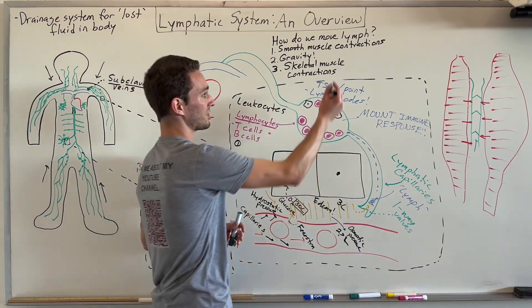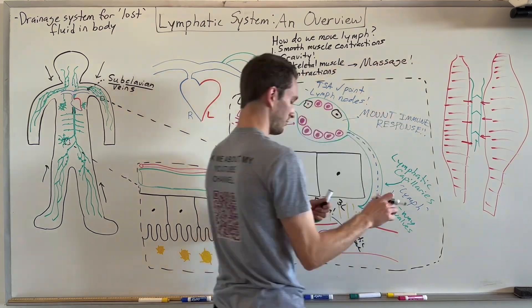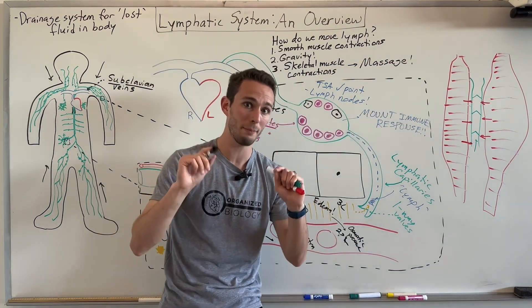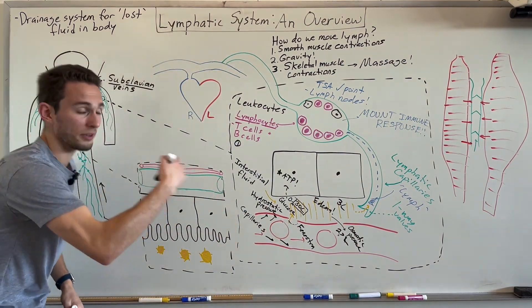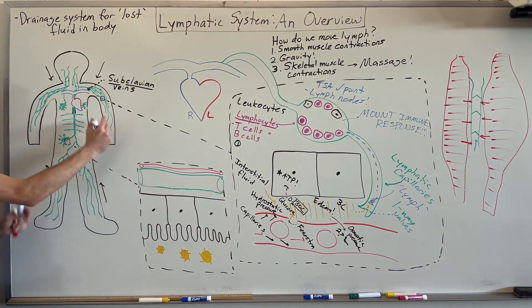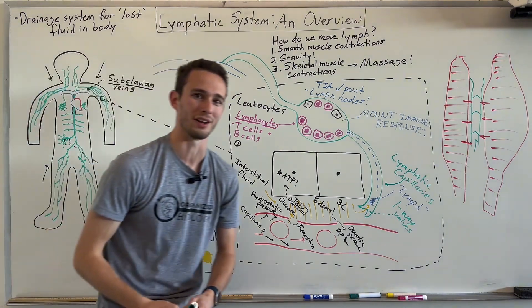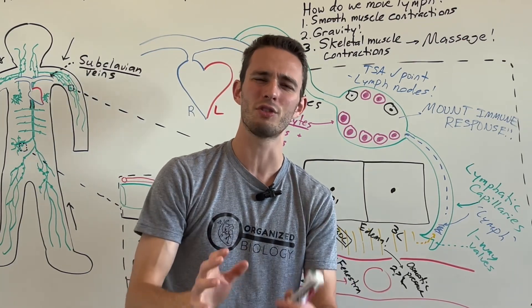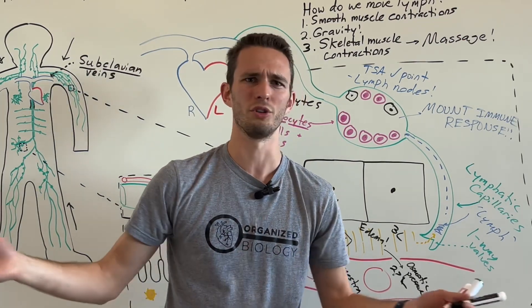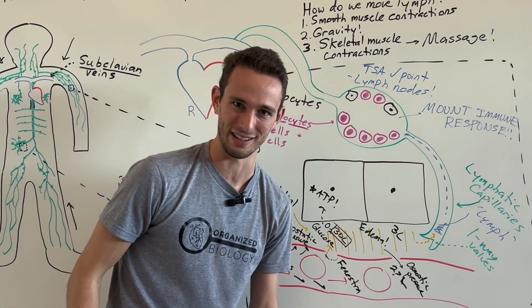Awesome. Now, the last way that we can move lymph is actually by imitating skeletal muscle contractions through massage. As you massage, you want to remember to massage the muscles back towards basically the heart, but the subclavian veins in particular. So, if you're massaging arms, massage upward, massage upwards on the legs, and so forth and so on. So, this holiday season or next holiday season, whenever the heck you're watching this video, give your grandparents or parents or whatever older people are in your life and give them a nice lymphatic massage so that we don't get edema in their bodies.